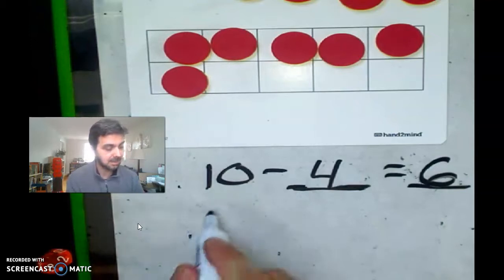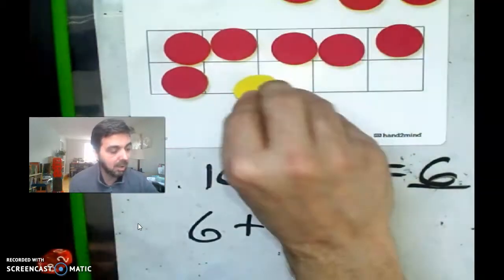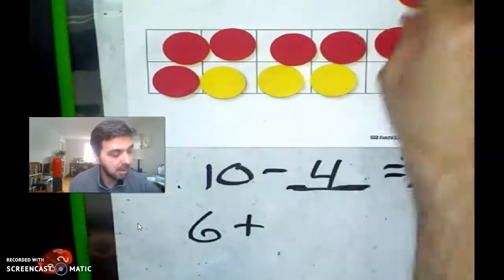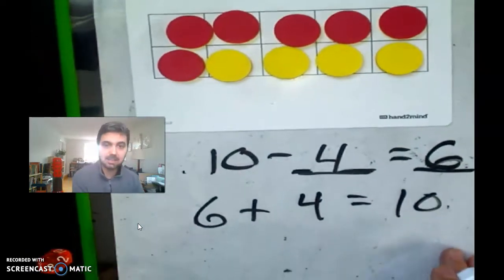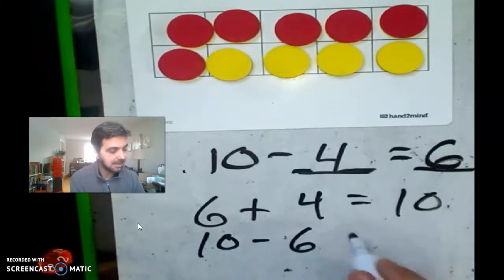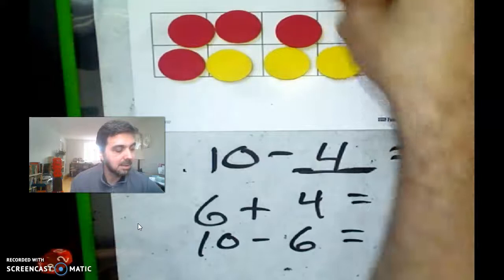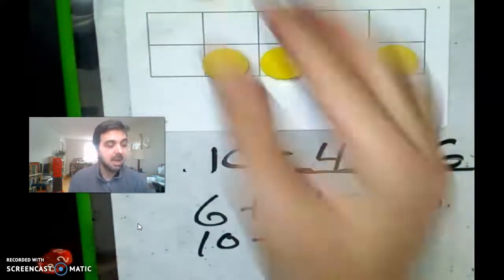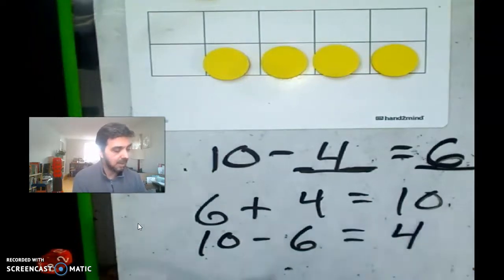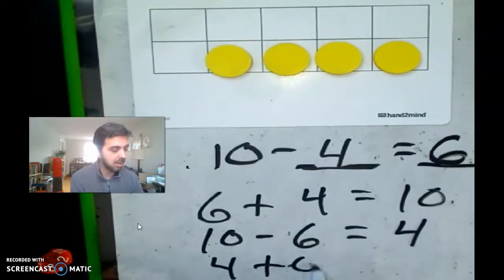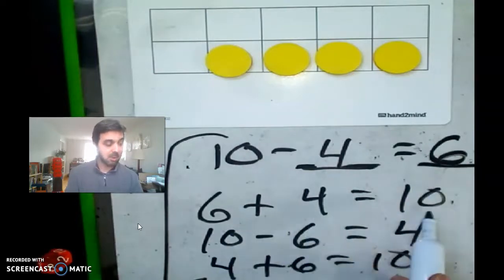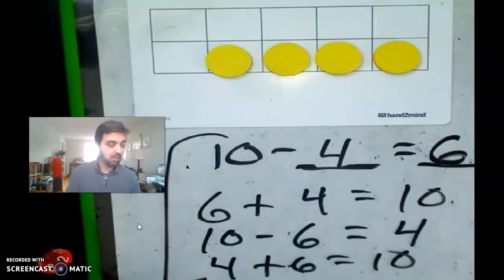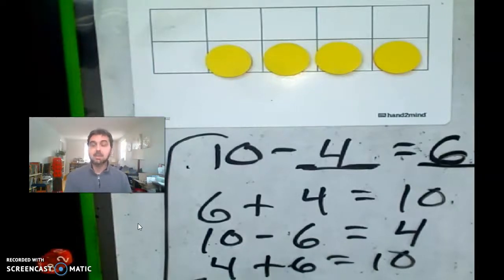And now what if I did this? What if I did 10 minus 6? What if I took away the 6 reds? 1, 2, 3, 4, 5, 6. How many am I left with? 4. Yeah, 4. Okay, so do you see how this is all, it's all, this is a fact family right here. Okay, 10 minus 4 is 6. 6 plus 4 is 10. 10 minus 6 is 4, and 4 plus 6 is 10. Okay, they're all connected. So if you know that 6 plus 4 is 10, you also know, sorry, if you know that, if you know that 4 plus 6 is 10, you also know that 6 plus 4 is 10, right?